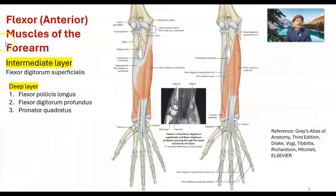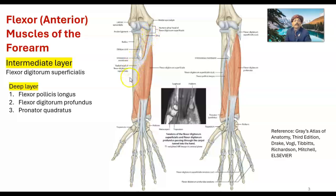Moving to the intermediate layer: flexor digitorum superficialis. This muscle also has origin from the common flexor origin at the medial epicondyle, and also from the coronoid process of the ulna as well as from the radius. It inserts into the sides of the middle phalanx — on both sides — of the index, middle, ring, and little fingers.